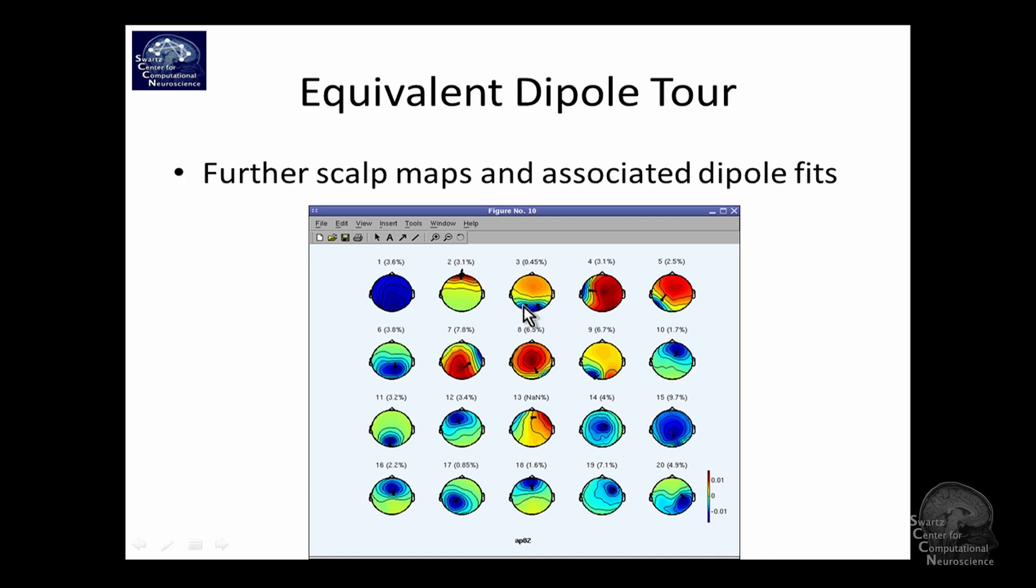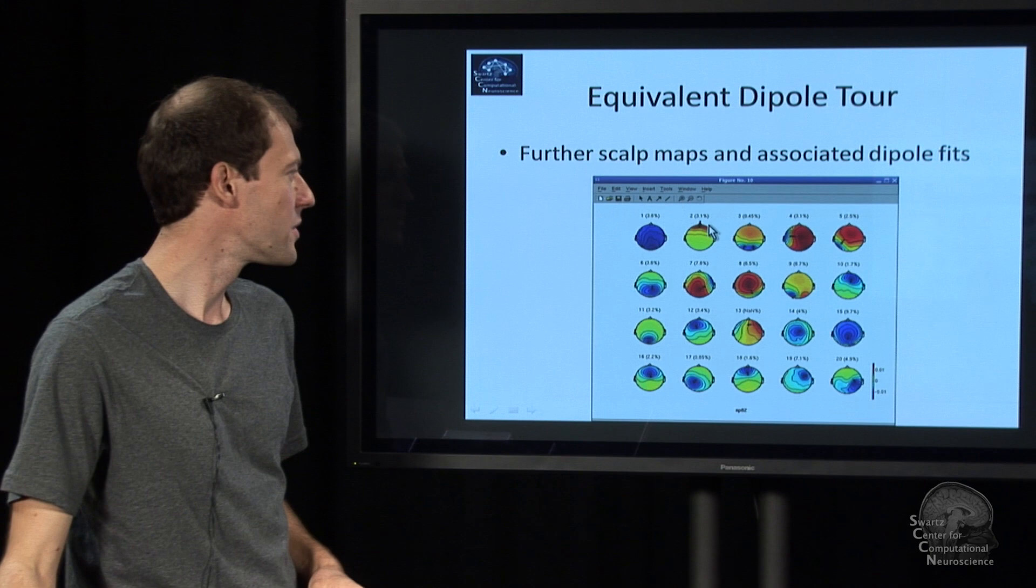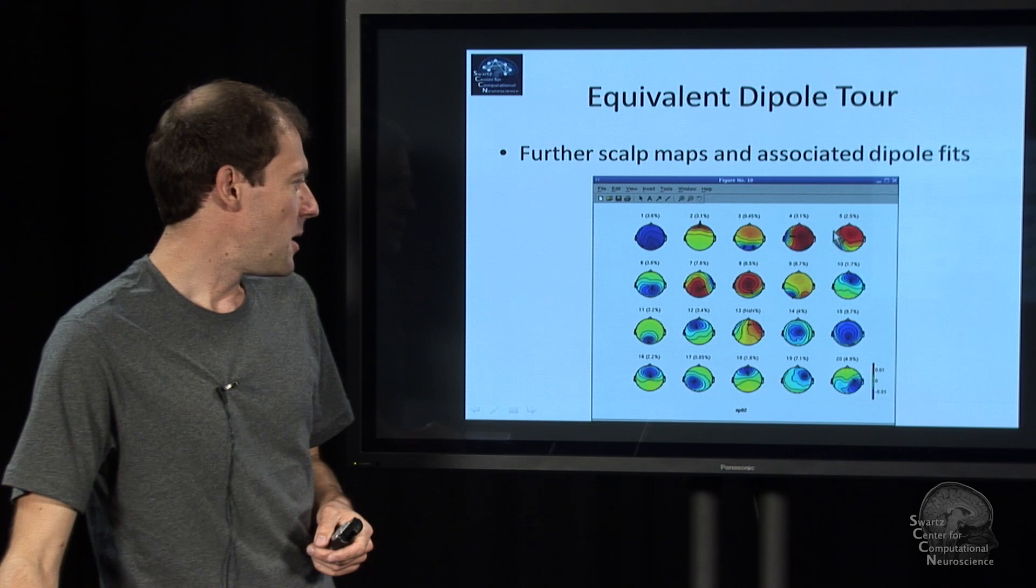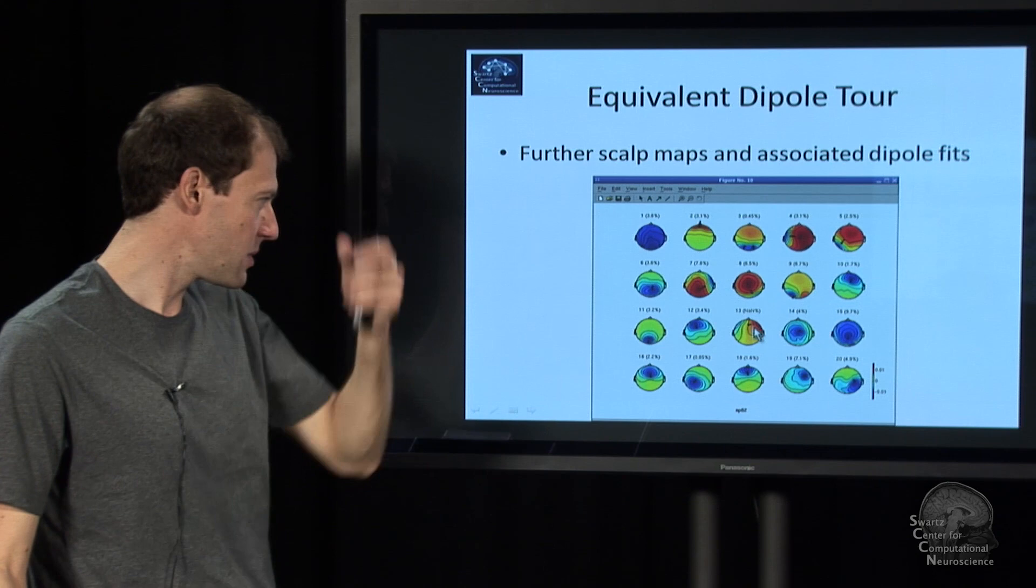So this is an occipital one. It's actually two dipoles. Here is a frontal one. It's probably an eye blink. Here is one which is sort of tangential, which means it must be in a sulcus, in a fold, basically. Here is another one that's tangential.